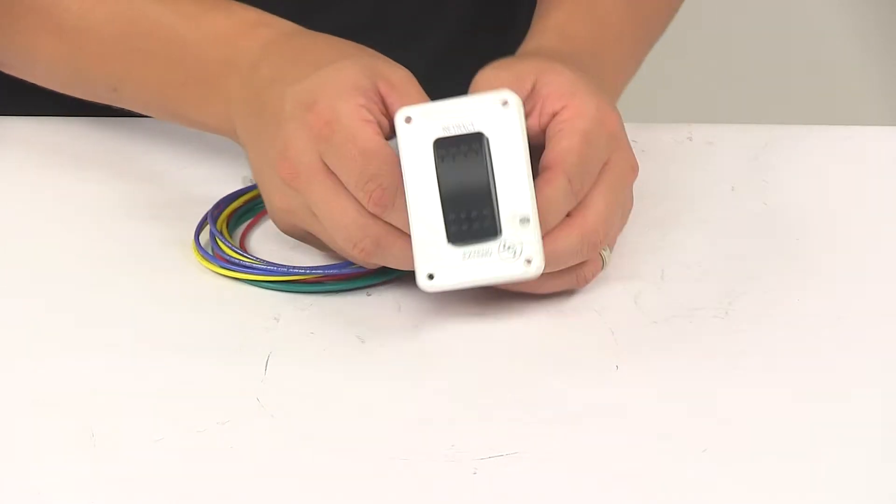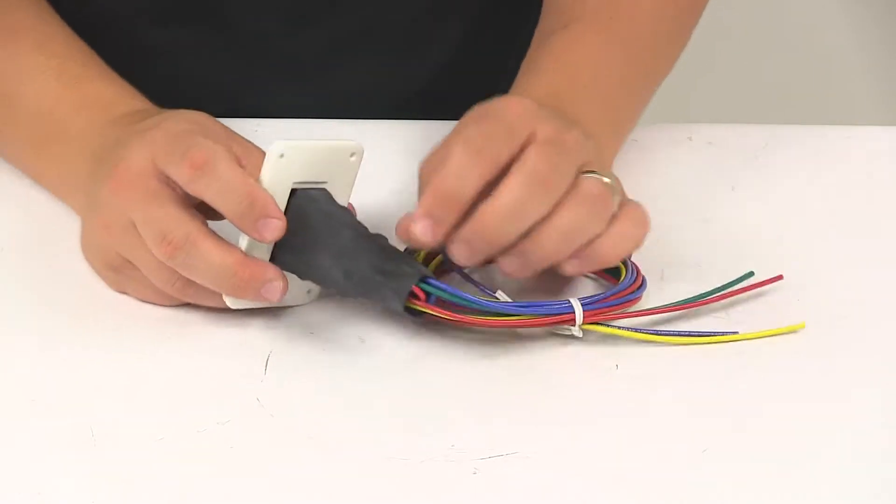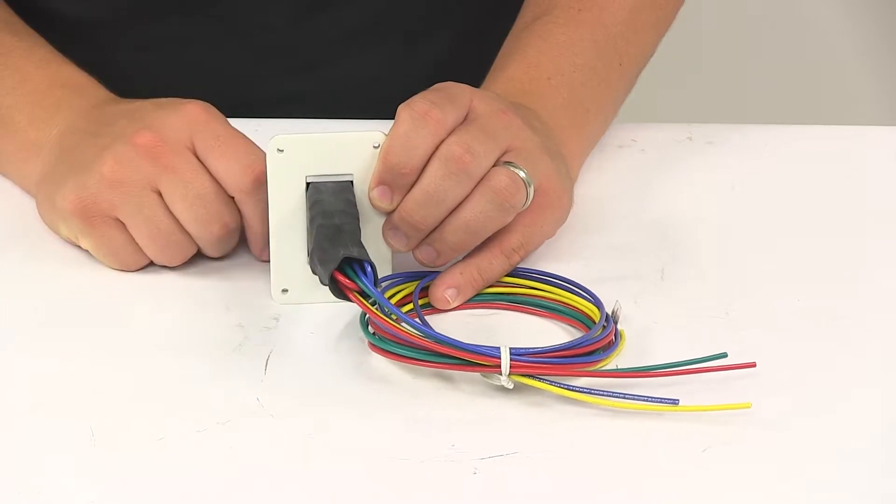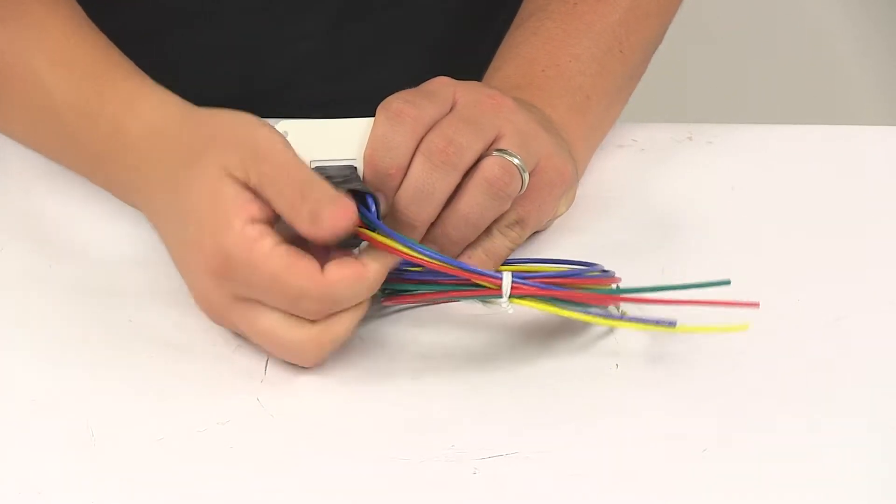Mounting hardware is not included. It does feature four pre-drilled mount holes to easily get it installed. On the back side, you'll notice it has the casing to keep the wires protected from the elements and to keep them all grouped together.